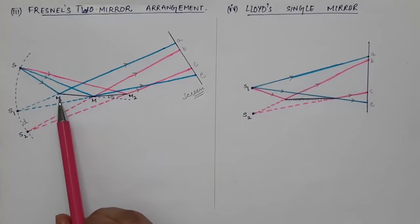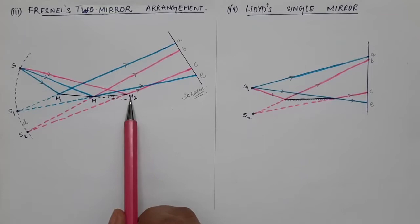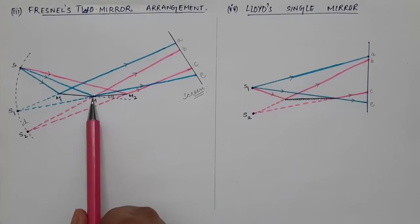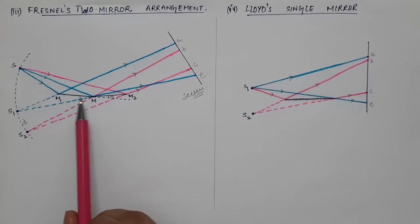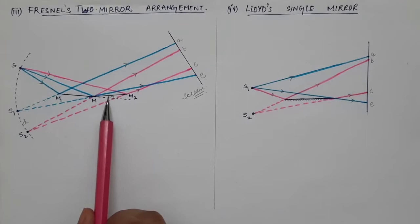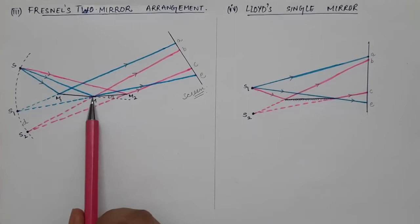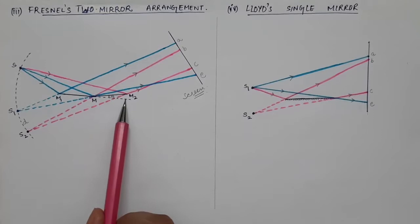Fresnel took two mirrors shown here as M1 and M2. M1 is the first plane mirror and M2 is the second plane mirror, and these plane mirrors were joined at a particular junction, capital M. So M is the common junction of the two mirrors. These two plane mirrors are not in a straight line but are tilted at a very small angle theta with each other.